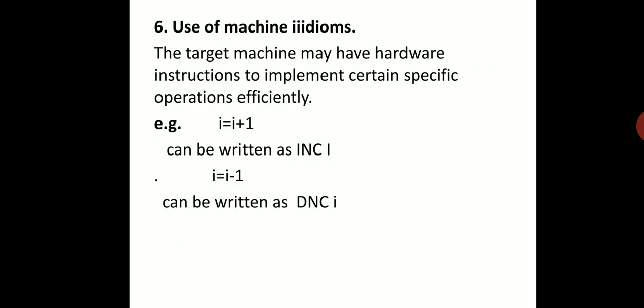Use of machine idioms: certain hardware instructions can be used for efficiency. For example, to increase the value of variable i by 1, we write i = i + 1 in 3-address code — this can be replaced by the hardware instruction INCI (increment i). Similarly, to decrease the value of i by 1, the 3-address code i = i − 1 can be replaced by DNCI (decrement i).